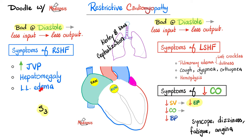Right-sided heart failure and left-sided heart failure, plus symptoms of low cardiac output. Don't forget possible effects on the kidneys, liver, gallbladder, small intestine, and large intestine. Signs of left-sided heart failure on imaging include pulmonary edema signs such as the bat-wing sign, cephalization of the vasculature, and Kerley B lines.